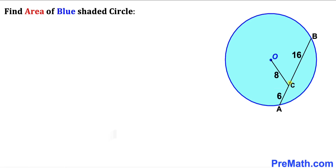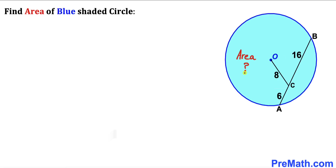Welcome to pre-math. In this video we have got chord AB inside this blue circle with center O, and we got another line segment OC such that AC length is 6 units, BC length is 16 units, whereas OC is 8 units. Our task is to calculate the area of this blue shaded circle.